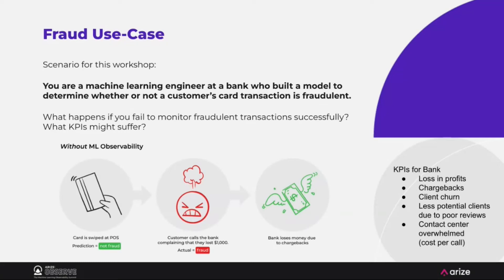If you fail to monitor for fraudulent transactions — some of you might have experienced this if your credit card got flagged as fraud and it either wasn't fraud, that's an inconvenience, or something wasn't flagged as fraud and it was, which is also an inconvenience. Banks want to avoid both because either way it's a loss in profits — they either have to pay for chargebacks, they might have an overwhelmed contact center, potential client churn, poor reviews, and low customer satisfaction.